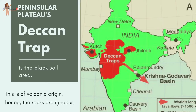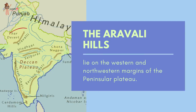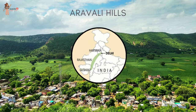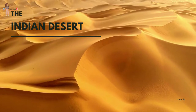One distinct feature of the peninsular plateau is the black soil area known as the Deccan Trap. This is of volcanic origin; these igneous rocks have been denuded over time and are responsible for the formation of black soil. The Aravalli hills lie on the western and northwestern margins of the peninsular plateau. These highly eroded hills are found as broken hills extending from Gujarat to Delhi in a southwest to northeast direction.